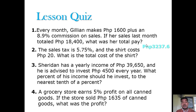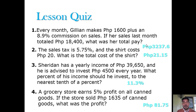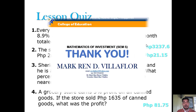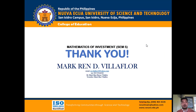The answers: Number 1 is 3,237.6 pesos. Number 2 is 21.15 pesos. Number 3 is 11.3 percent. Number 4 is 81.75 pesos. That's commission, tax, and profit. If you have any questions or clarifications, please feel free to send a message in our group chat, 75 BSE 2B. Thank you, hope to see you soon — keep healthy and safe, God bless you all, future teachers.